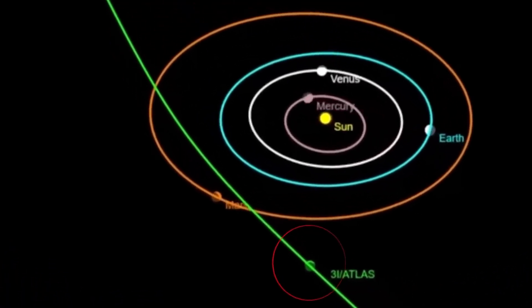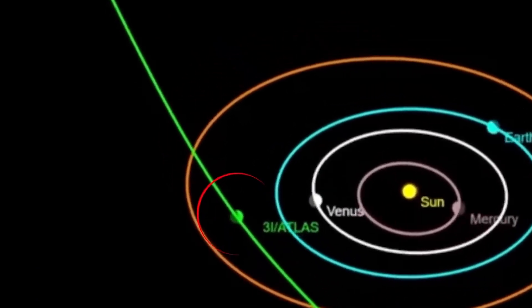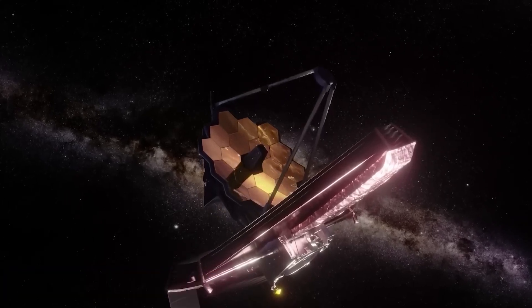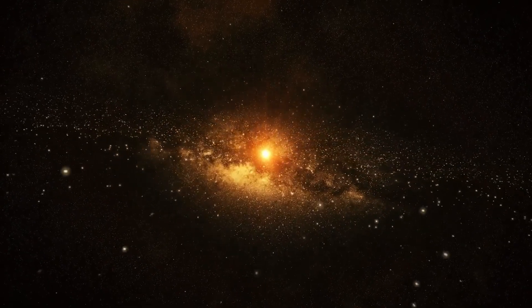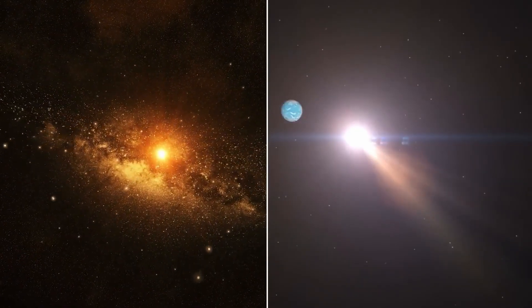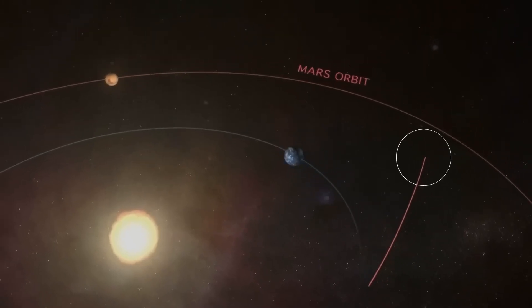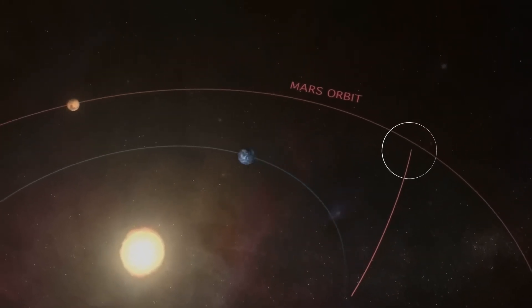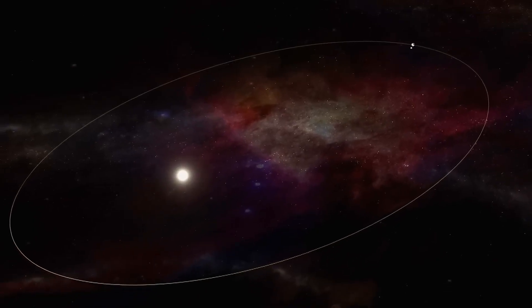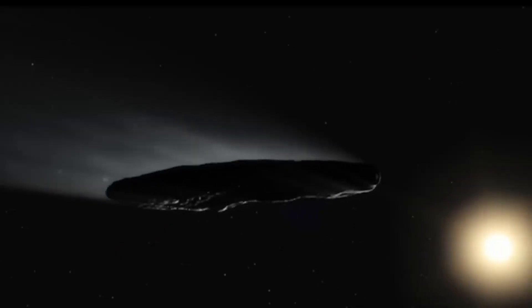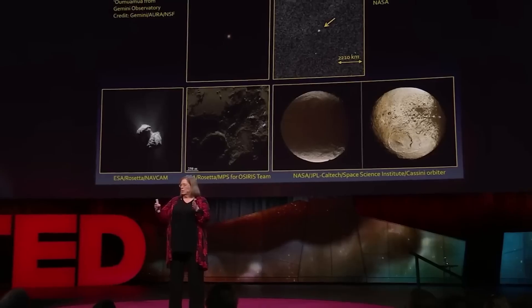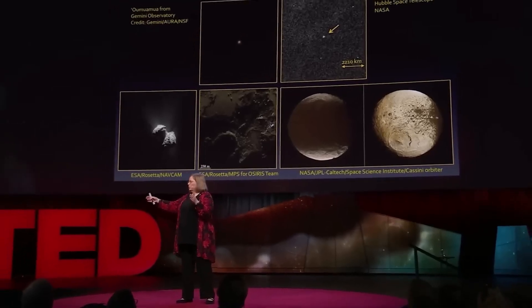When new objects appear in the sky, scientists usually calculate something called orbital eccentricity. This number tells us how stretched out a path is compared to a circle. Most common asteroids and comets have values between zero and one, which means they loop the sun again and again, bound by gravity. But if the value shifts above one, it means the object isn't tied down at all. It has too much speed, too much energy, and its path is open-ended.